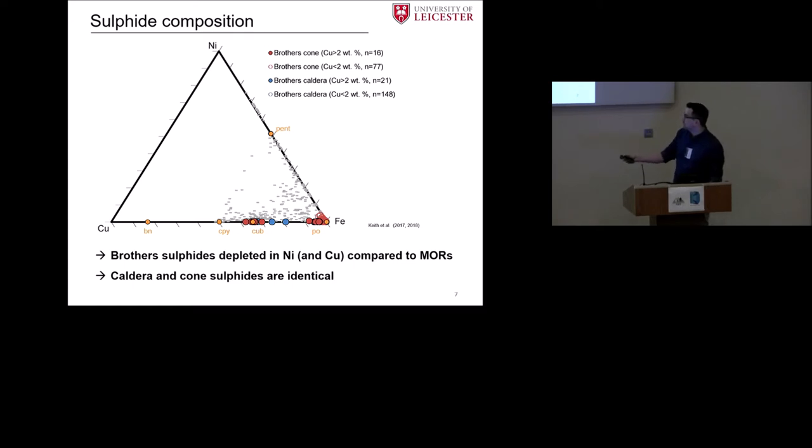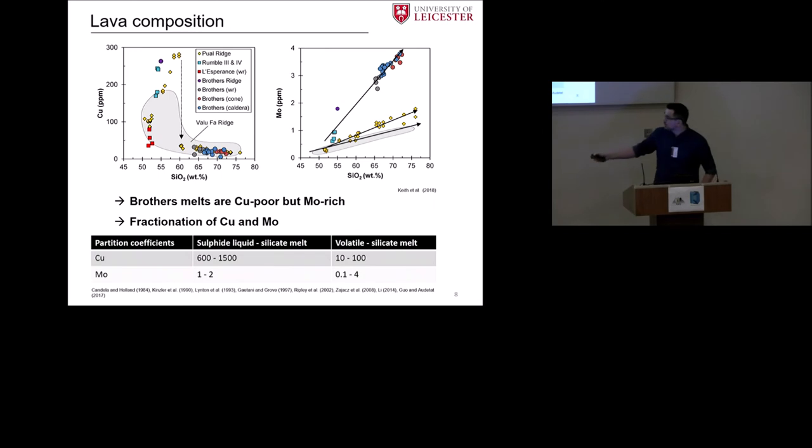Interestingly, we don't find chalcopyrite, which is still quite common at mid-ocean ridges. Another point maybe worth mentioning is that we don't see a difference between those from the caldera and the cone, so they are identical in composition. So, in other words, this could possibly work for copper.